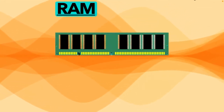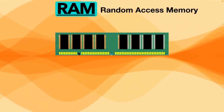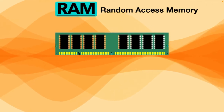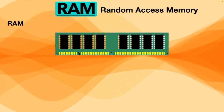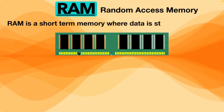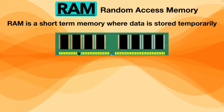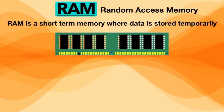Hello everyone, today we are going to talk about RAM and its types. RAM stands for Random Access Memory. Technically, RAM is a short-term memory where data is stored temporarily, and it's one of the most basic elements of computing.